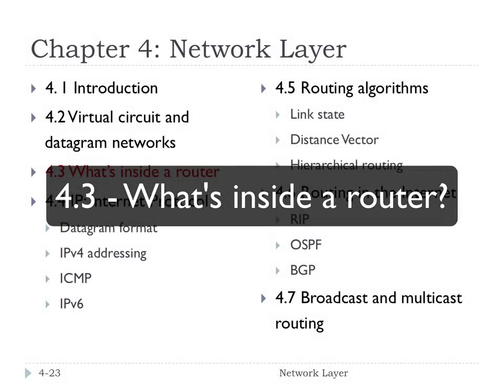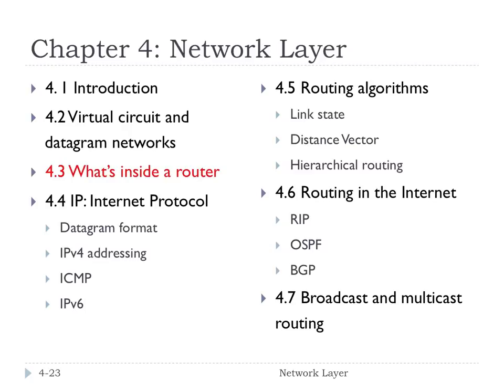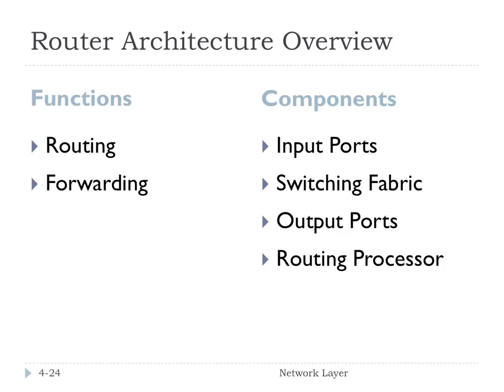Section 4.3 asks and answers the question: what is inside a router? As an overview, a router is essentially involved in two things. It's involved in routing, which is the global process of delivering packets over multiple hops, and it's involved in forwarding, which is forwarding datagrams from ingoing links to outgoing links. These are the four components of a router: input ports, the switching fabric, output ports, and the routing processor.